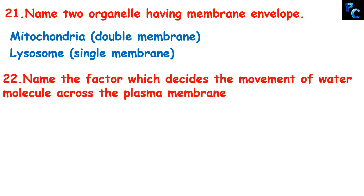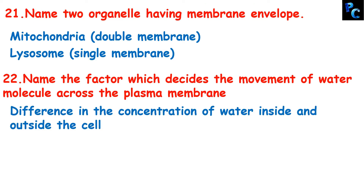Name the factor which decides the movement of water molecules across the plasma membrane. The difference in the concentration of water inside and outside the cell decides whether water will move into or out of the cell. So the factor is the difference in the concentration of water inside and outside the cell.